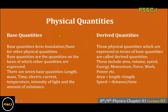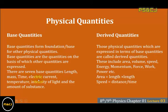Physical quantities are divided into two types: base quantities and derived quantities. Base quantities form the foundation for other physical quantities. Base quantities are the quantities on the basis of which other quantities are expressed. There are seven base quantities: length, mass, time, electric current, temperature, intensity of light, and amount of substance.